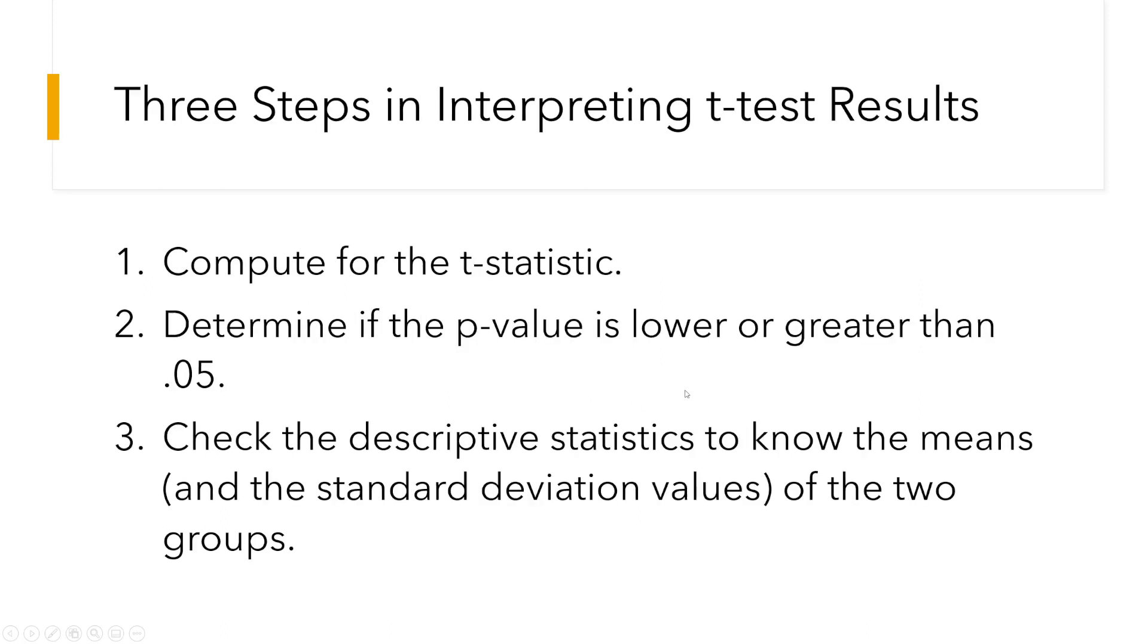Anyway, so here are my three steps in interpreting the t-test results. So, I recommend that first you look at the t-statistic or the value of the t, and then after you check the t-statistic, we look next at the p-value to determine if it's lower or greater than 0.05. And to make sense of the results, you have to check the descriptive statistics, particularly the means alongside the standard deviation values of the two groups.